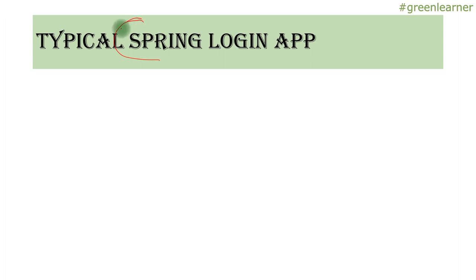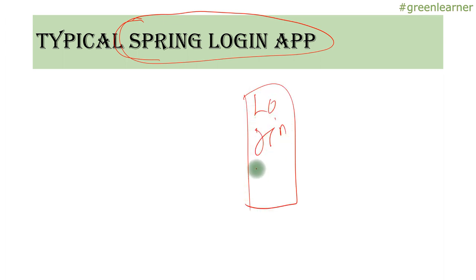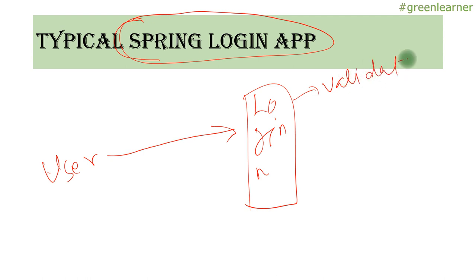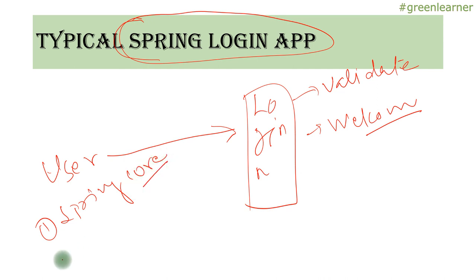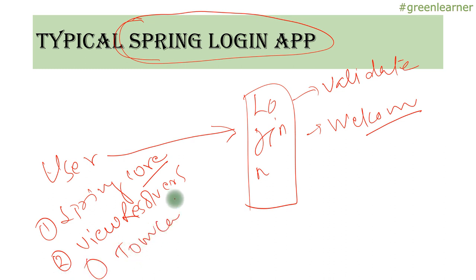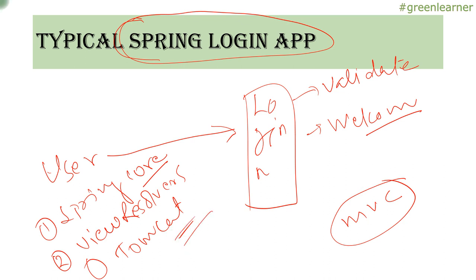Let's talk about a typical Spring login application. Imagine Spring Boot is not in the picture — it hasn't been born yet and we only have the Spring Framework. So how would you build a login app? A user comes to login, you validate, and if validation passes, you show a welcome message. If you know the Spring Framework, what do you need for this? You need Spring core jars, view resolvers, and a Tomcat server to run the application. This is the MVC — model view controller — application model.